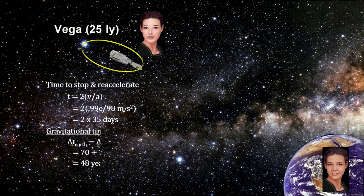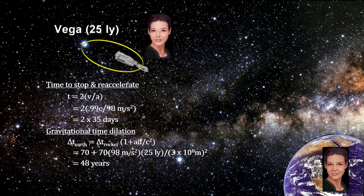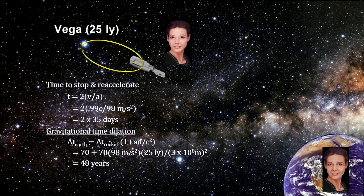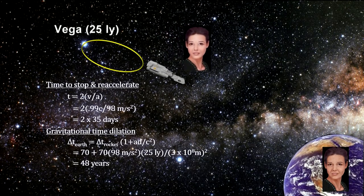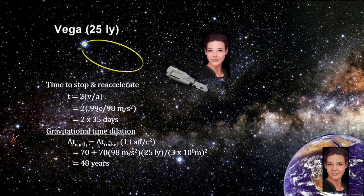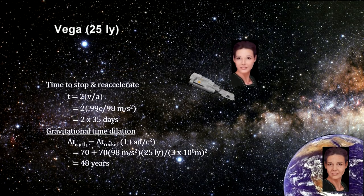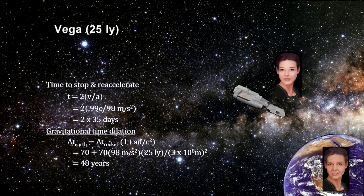Gravitational time dilation shows that as her clock ticks 70 days, her twin's clock on Earth will have ticked 18,134 days. That's 48 years. The twin on Earth agrees.